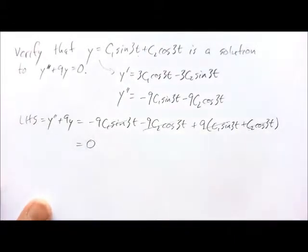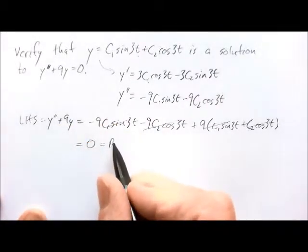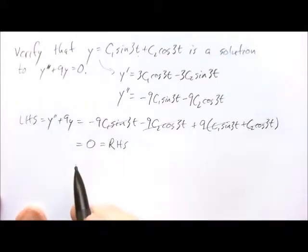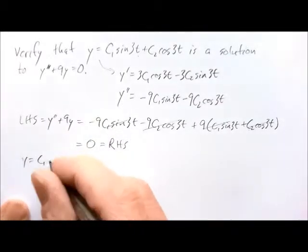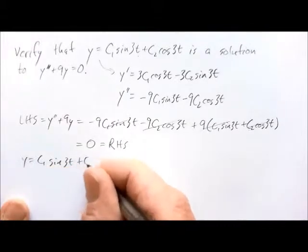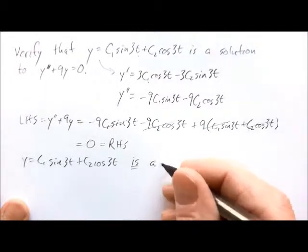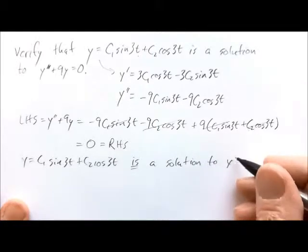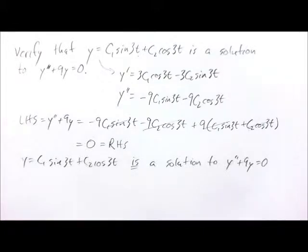The 9c2 cosine 3t cancels with the negative 9c2 cosine 3t. After everything cancels we get 0, which is the right-hand side. We've shown that the left-hand side equals the right-hand side, so y equals c1 sine 3t plus c2 cosine 3t is a solution to y double prime plus 9y equals 0.